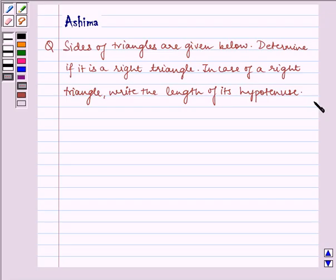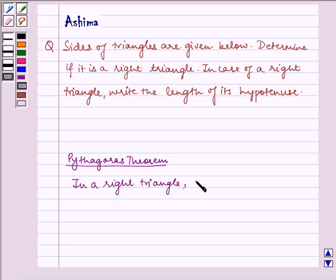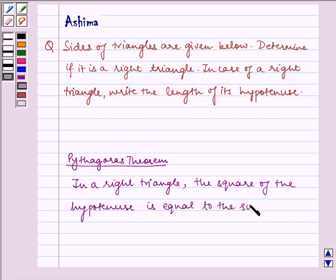Now before writing the solution, let us understand the Pythagoras theorem. In a right triangle, the square of the hypotenuse is equal to the sum of the squares of the other two sides.